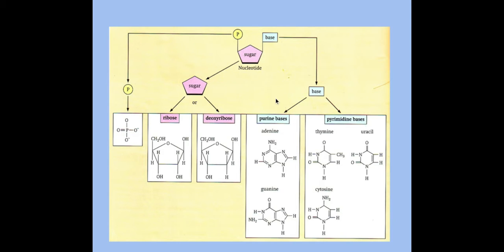If I have an RNA nucleotide, it means that my base can either be A, G, C, or U if it's RNA. If it's a DNA base, then it can either be a T, an A, a G, or a C.